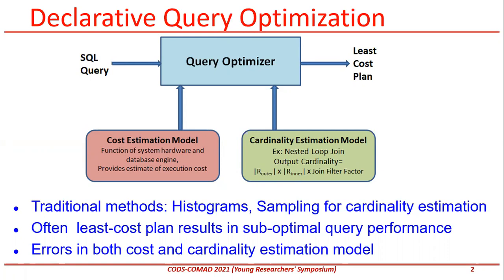Traditionally, histograms and sampling methods were used for cardinality estimation, and algebraic functions were used for cost estimation. But both of these models are erroneous due to technical reasons, and thus they result in suboptimal query performance at runtime.